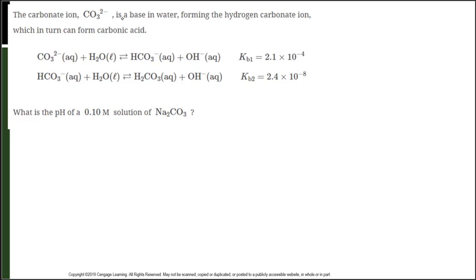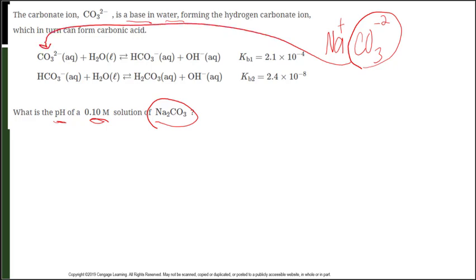We have the carbonate ion and it's a base in water, so the water is acting as an acid, forming hydrogen carbonate ion, which in turn can form carbonic acid. What is the pH of a 0.1 molar solution of Na2CO3? Na2CO3 is sodium carbonate with Na+ ions and CO3 2- ions. So the CO3 2- ions is part of this first reaction which has our Kb1 associated with it. So let's do our ice table.